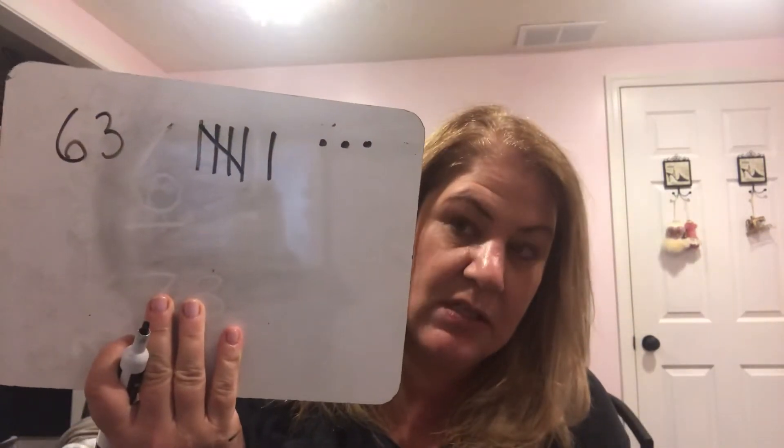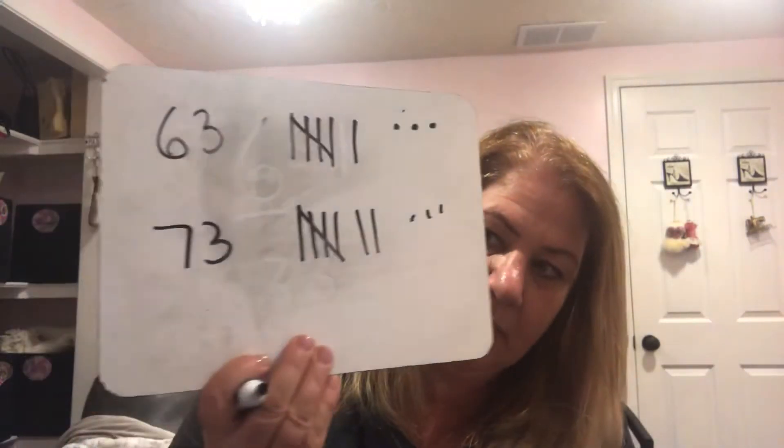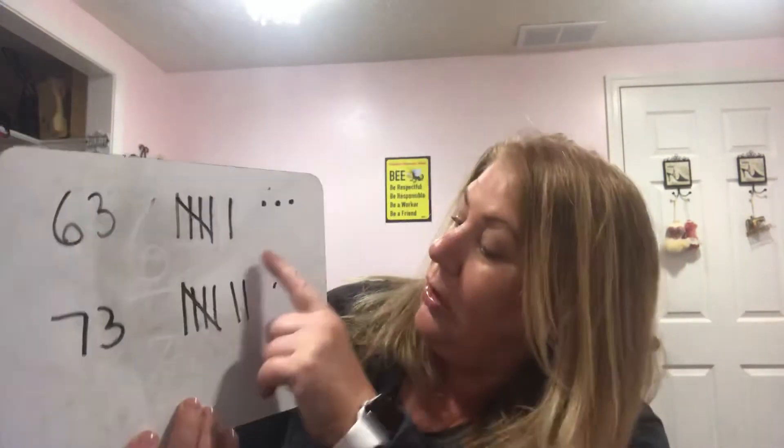Let me show you another way to help it make sense. I'm going to draw this really quick: 63 is six longs and three ones. 73 is seven longs and three ones — it's 10 more, or one long, which is the same as 10.